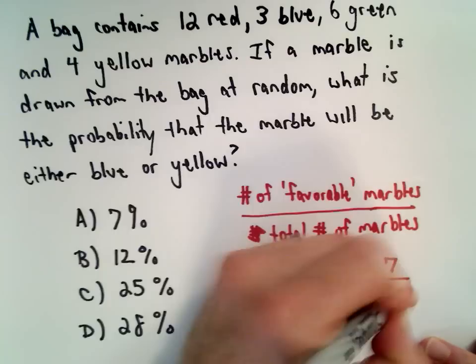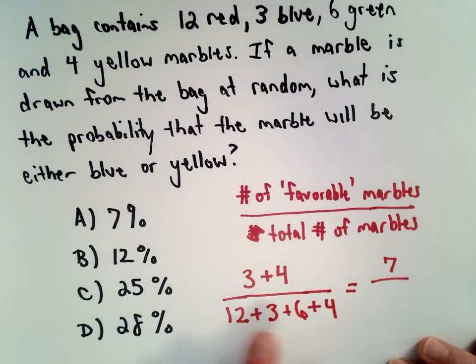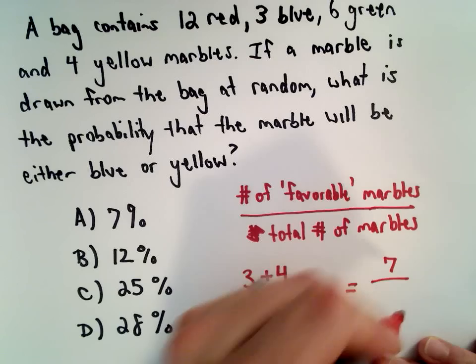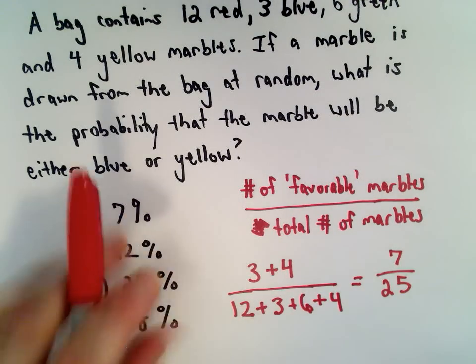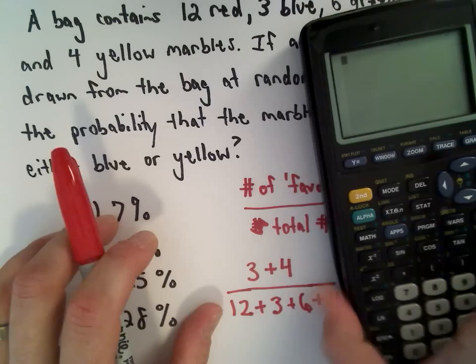3 plus 4 is 7 in the numerator. 12 plus 3 is 15, 15 plus 6 is 21, 21 plus 4 is 25. So we need to calculate 7 divided by 25.